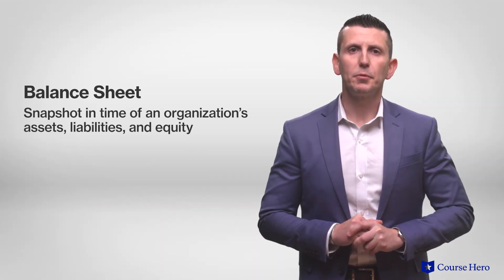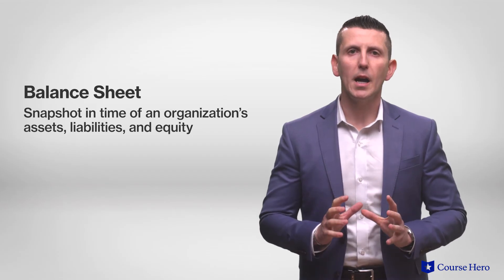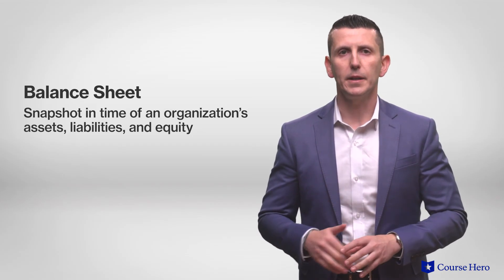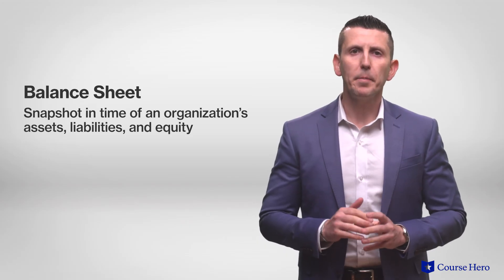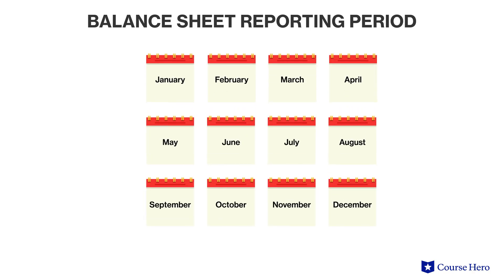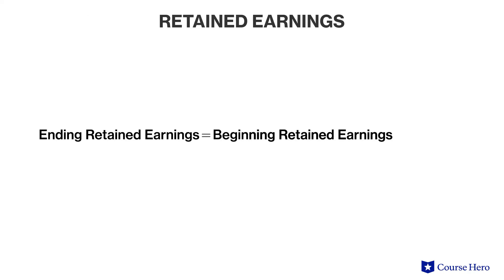Third is the balance sheet. The balance sheet represents a snapshot in time of an organization's assets, liabilities, and equity. It is typically prepared at the end of the period, whether it's a month, quarter, or year. The balance sheet connects with the income statement by way of retained earnings. Beginning retained earnings for the current period plus net income and minus dividends declared equals ending retained earnings on the balance sheet.